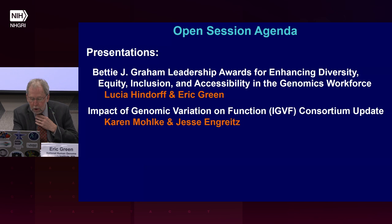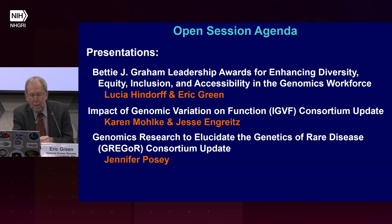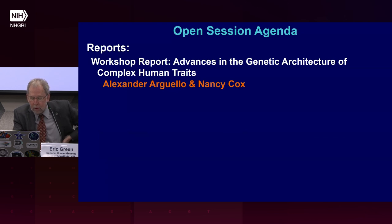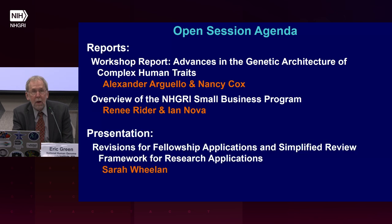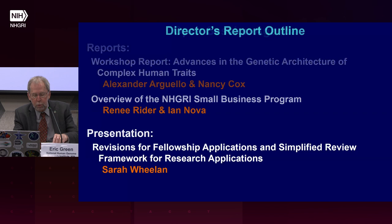Karen Bulke and Jesse Ingritz will talk about the impact of genomic variation on function, our IGVF consortium. Then Jennifer Posey will discuss the genomics research to elucidate the Genetics of Rare Diseases, or GREGOR consortium. After those presentations, Xander Arguella and Nancy Cox will report from the Advances in the Genetic Architecture of Complex Human Traits workshop. Renee Ryder and Ian Nova will overview the NHGRI Small Business Program, and Sarah Whelan will present on upcoming revisions for fellowship applications and a simplified review framework.